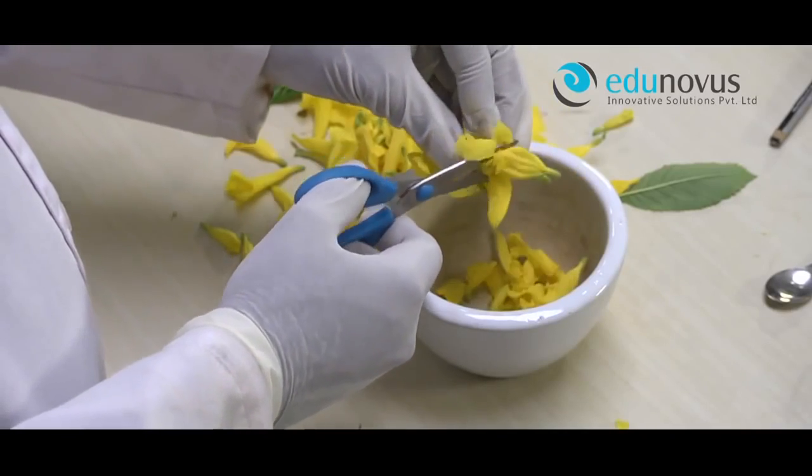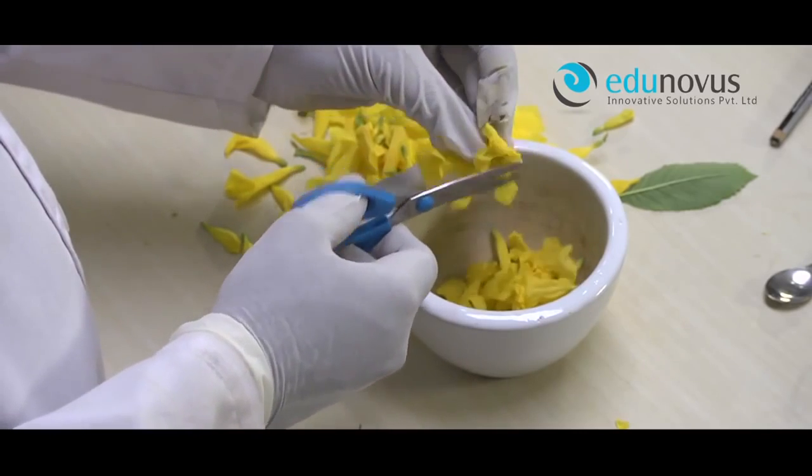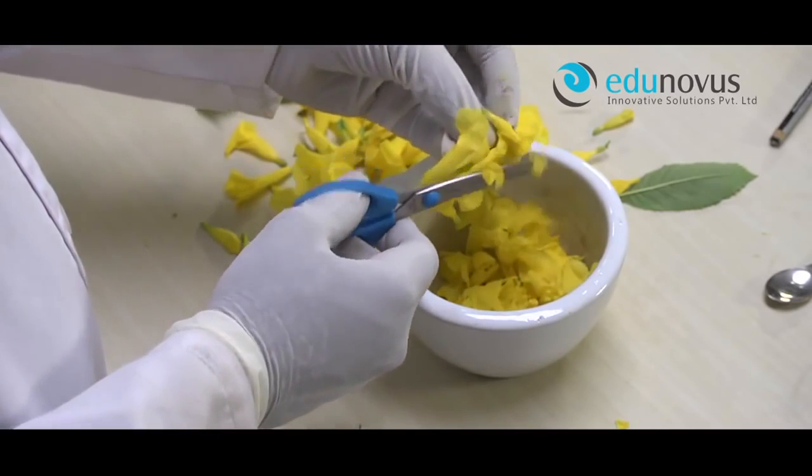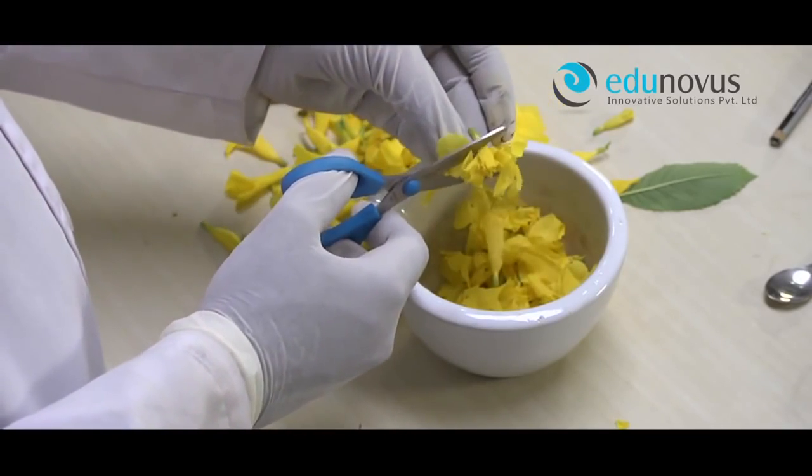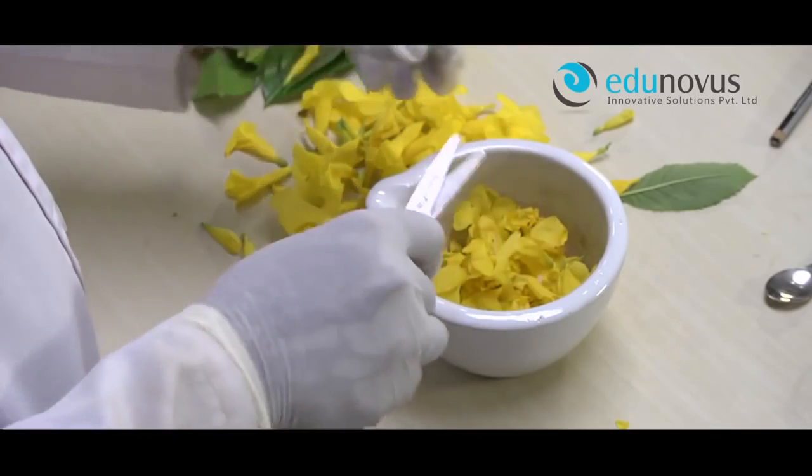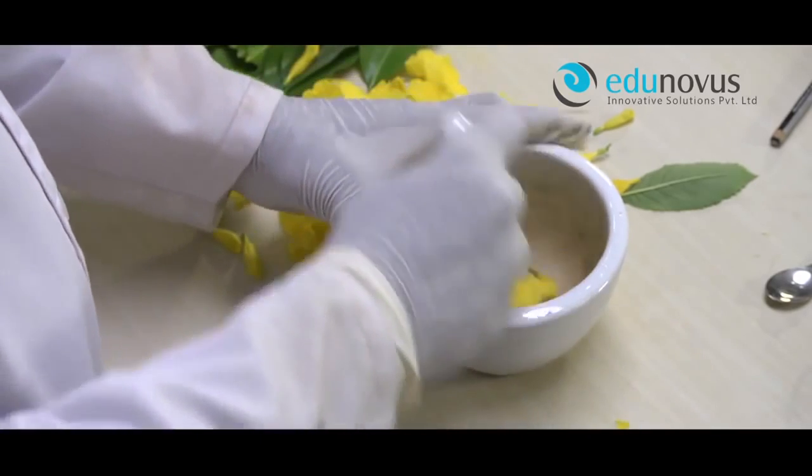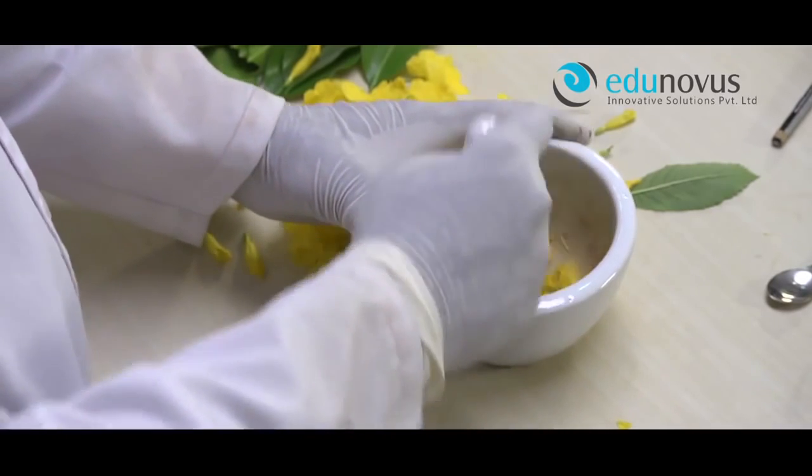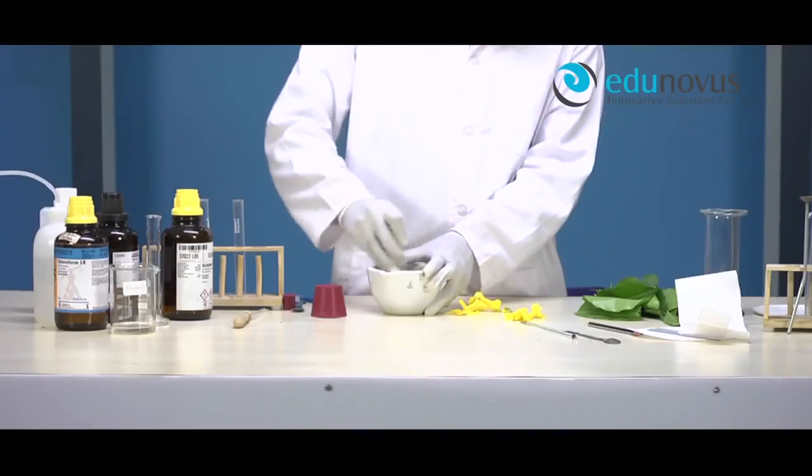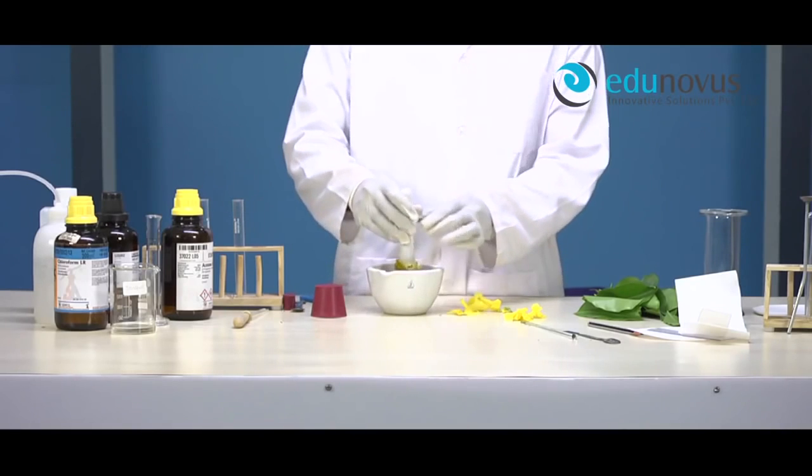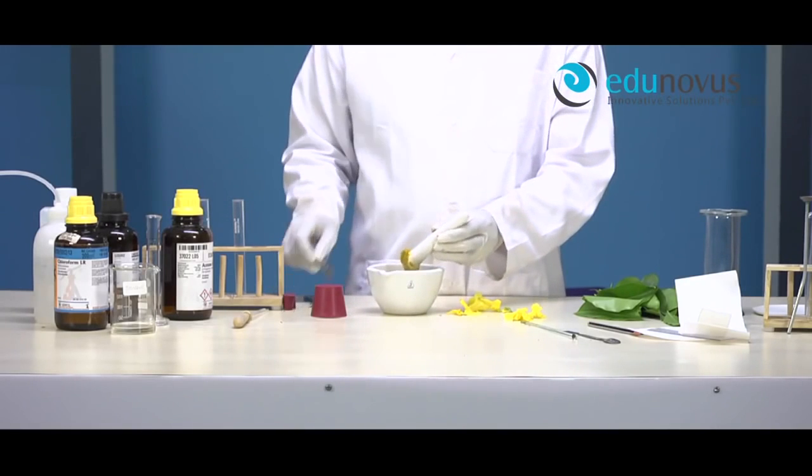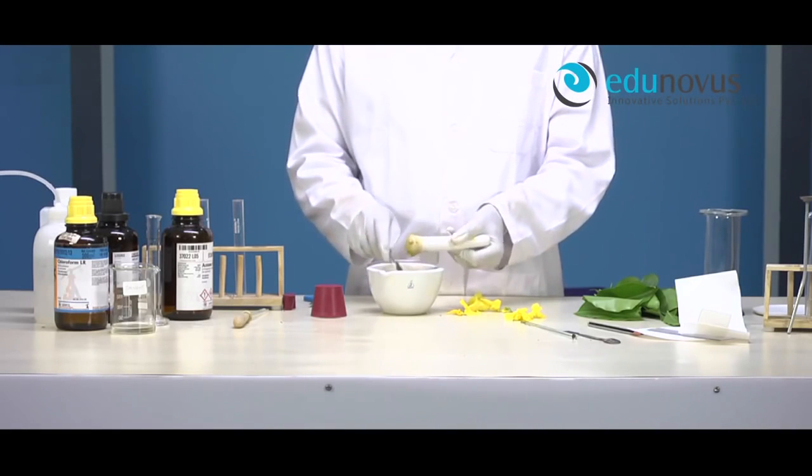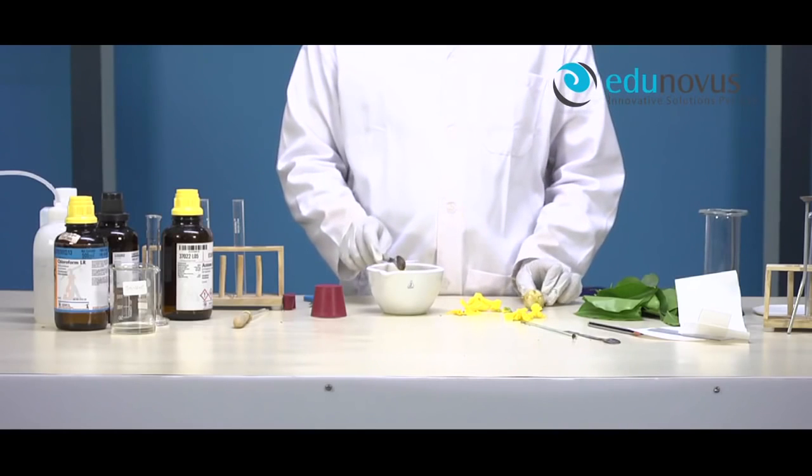First, chop the flowers into a mortar and crush them with the help of a pistil.